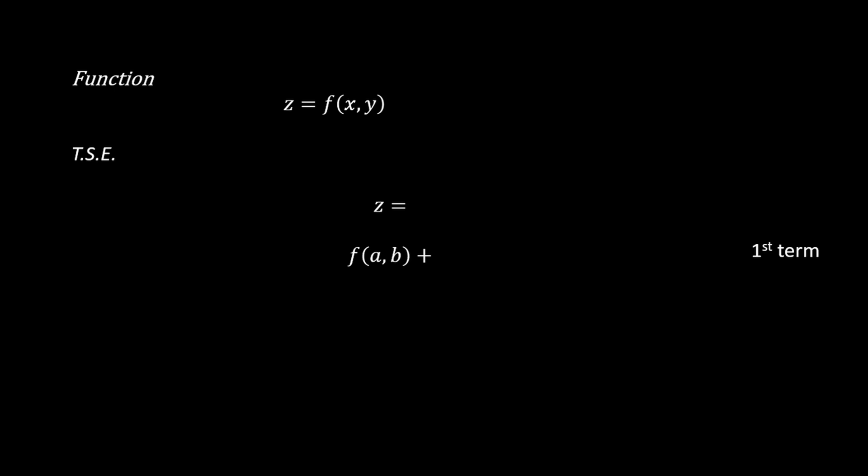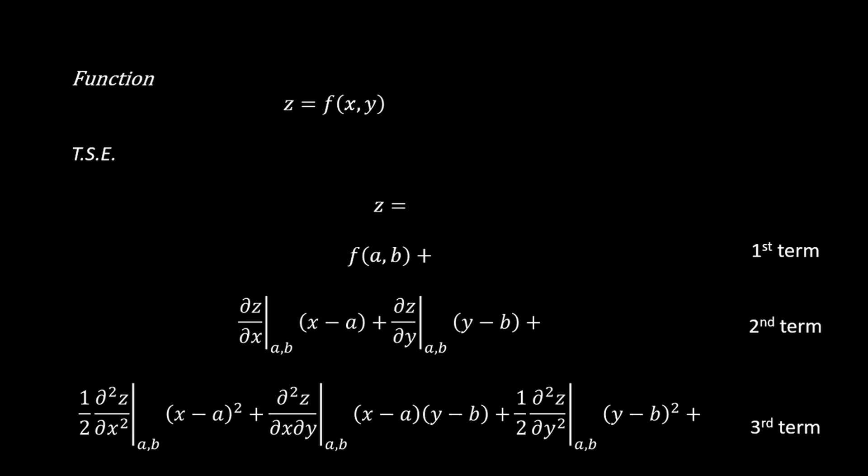If you want to do Taylor series expansion, for the first term you need to determine the function at a fixed point (a, b). For the second term you determine the derivative of the function at that fixed point and multiply it by (x minus a) and (y minus b). For the third term you determine the second derivative, and it goes on like this.